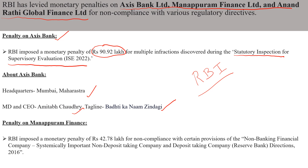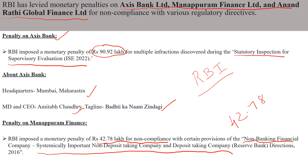Next, the penalty on Manappuram Finance. RBI has put a monetary penalty of 42.78 lakhs on Manappuram Finance. The reason is they have not followed certain provisions of the NBFC — Systematically Important Non-Deposit Taking Company and Deposit Taking Company directions. They should follow RBI's regulations on deposit taking, but since Manappuram Finance did not follow that, they were penalized 42.78 lakhs. The headquarters of Manappuram Finance is in Kerala, and the MD is VP Nandakumar.